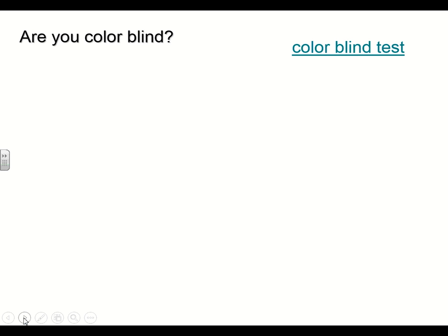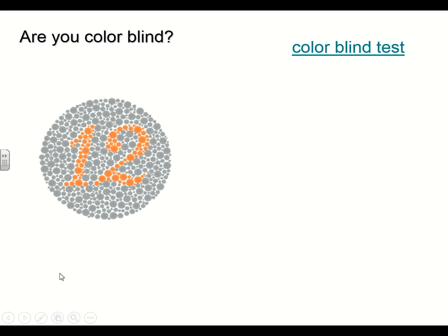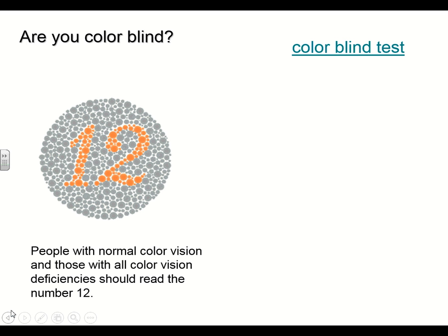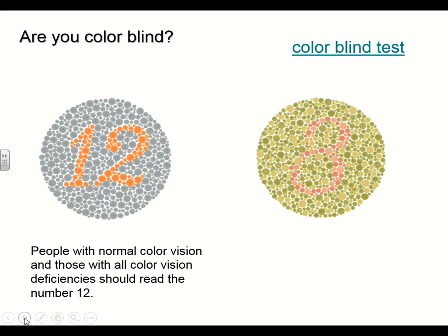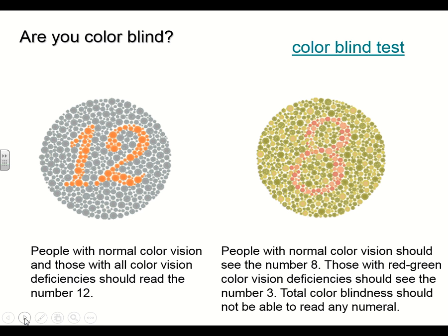Colorblindness means the cones in your eyes don't work properly. This first image everybody should be able to see the number 12, because it's readable by anyone with normal color vision or any colorblind deficiency. The next image — people with normal color vision should see the number 8, but those with yellow-green color deficiencies might see the number 3 instead. If you have total colorblindness, you won't be able to read a number at all. You can click here for a larger color test.